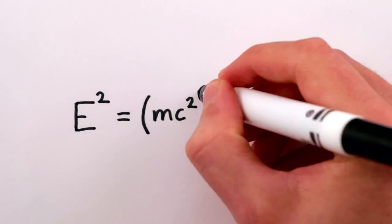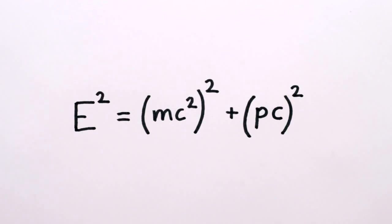The full equation is E squared equals mc squared squared plus p times c squared, where p represents the momentum of the object in question.